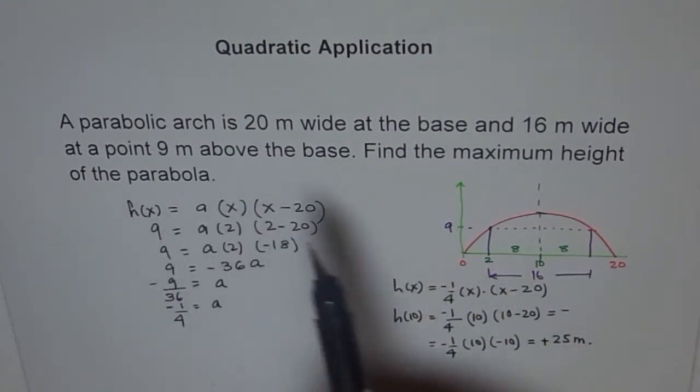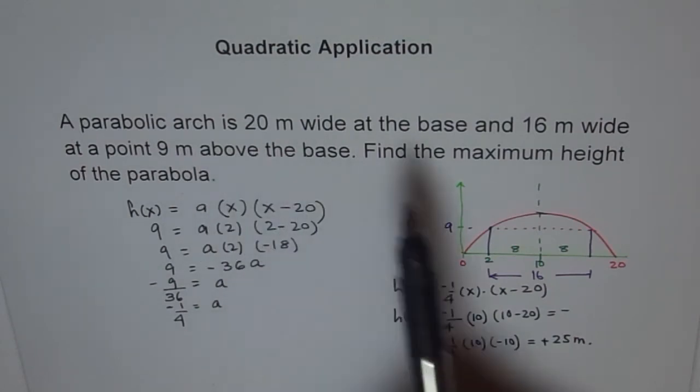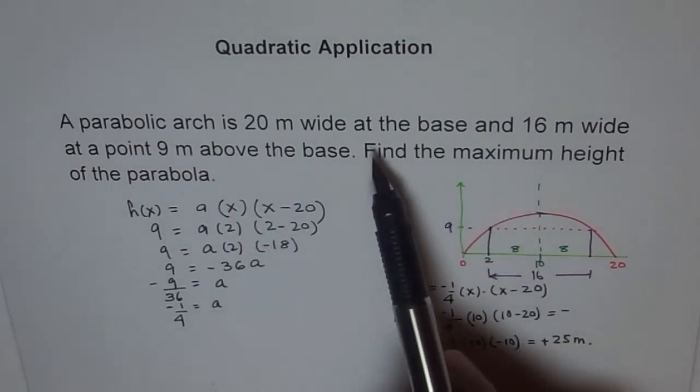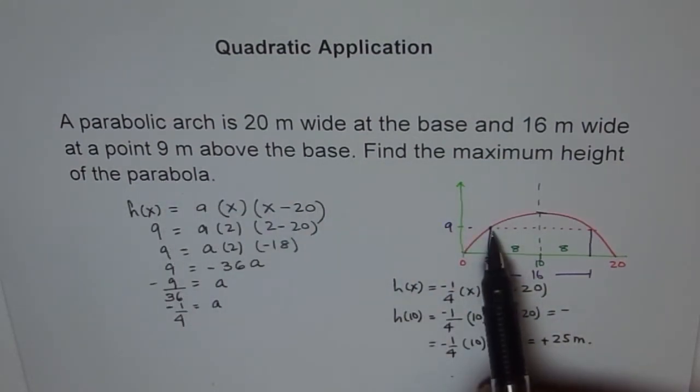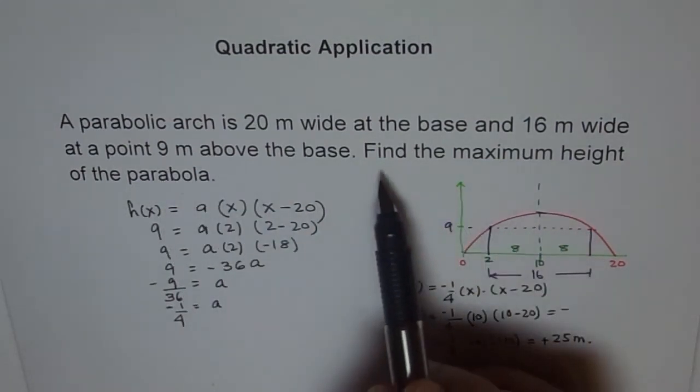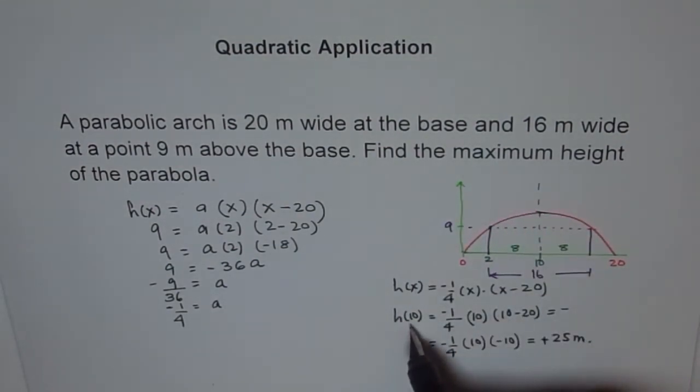So we have solved the problem. So parabolic arc is 20 meters wide. Here it is. At a base. And 16 meters wide at a point 9 meters above the base. 16 meters wide. Okay. Find maximum height. Maximum height will be at axis of symmetry, which is h(10).